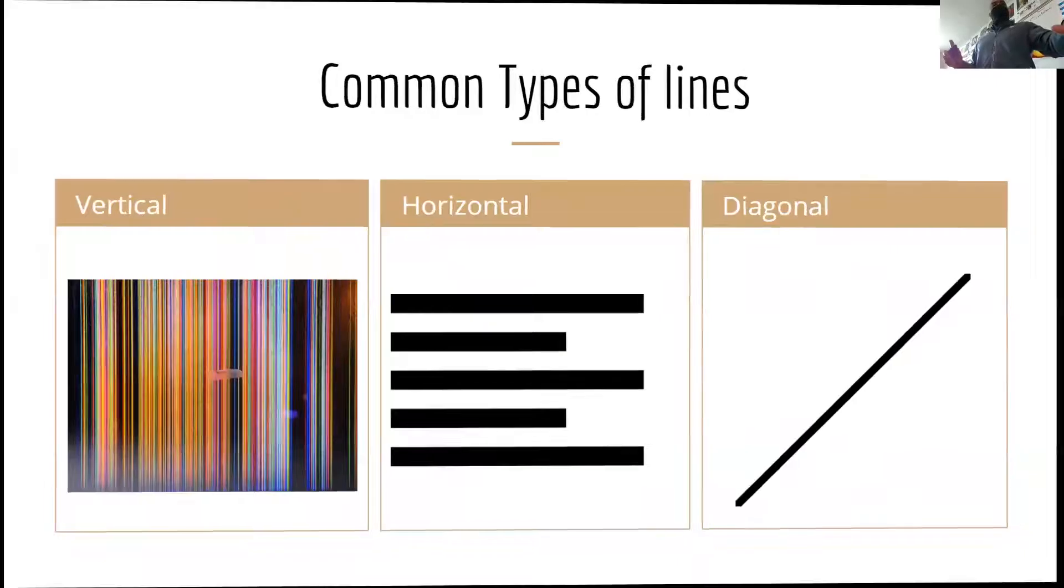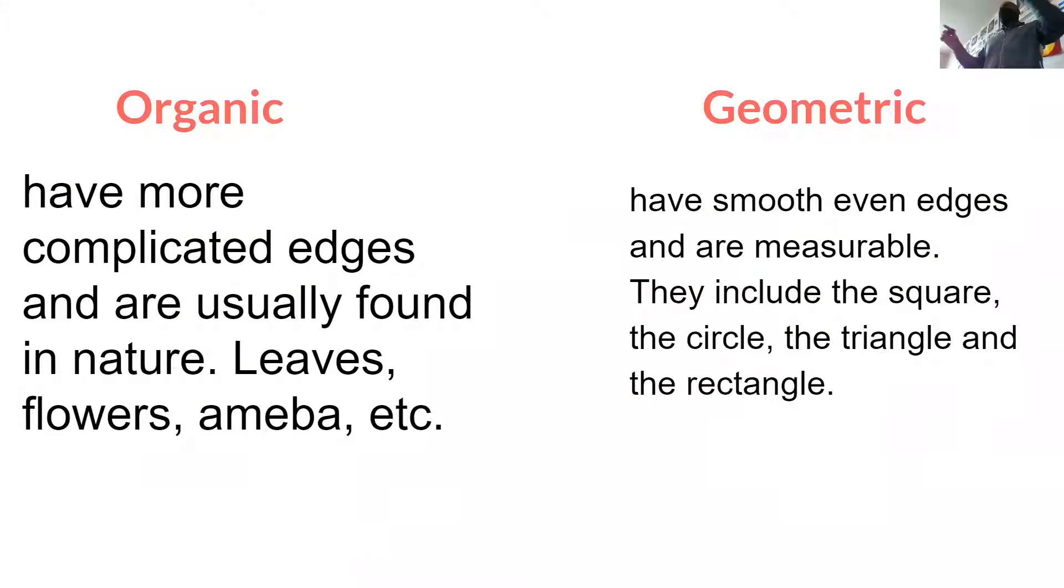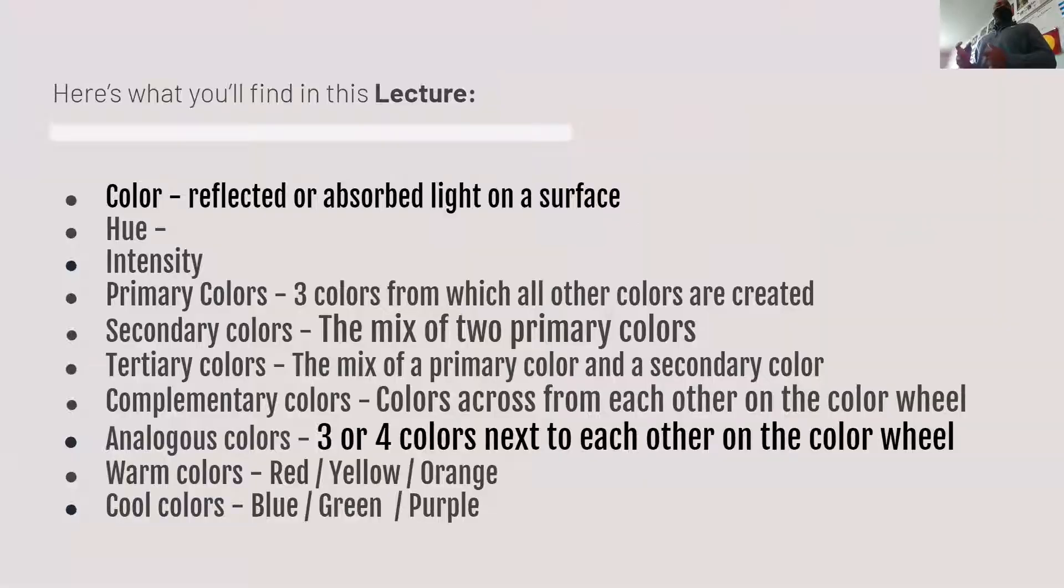Here's the definition of space. Here's the definition of value. Value can be the lightness and the darkness of a color. Remember, it can be a color or it could be white to dark.